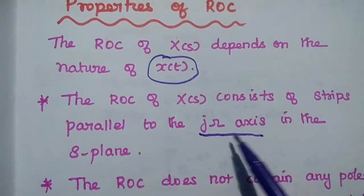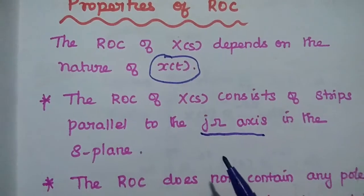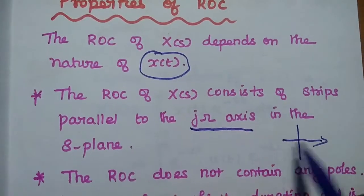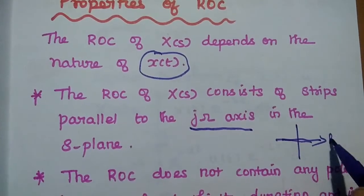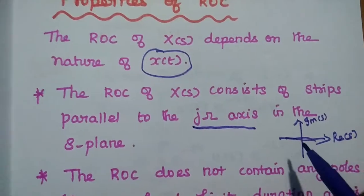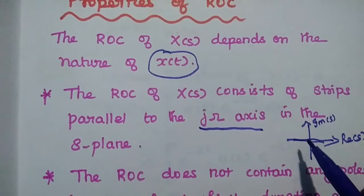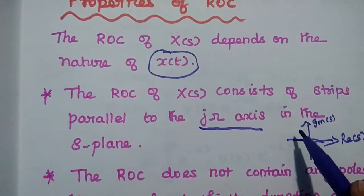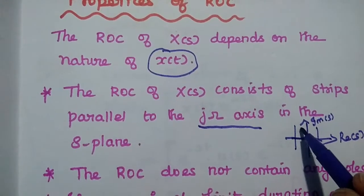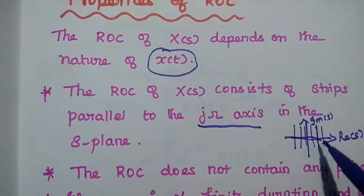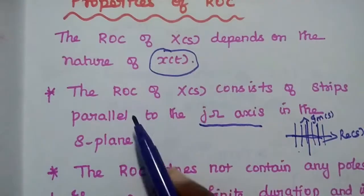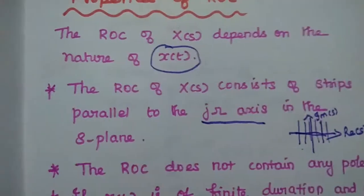That is nothing but the imaginary axis in the S-plane. In the S-plane, this is the real axis — the real part of S — and this is the imaginary part of S. If we are going to mark the region of convergence, it consists of strips parallel to the j-omega axis. ROC is always parallel to the imaginary axis.